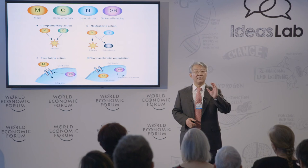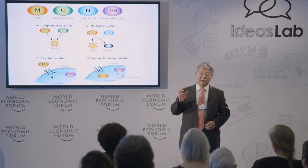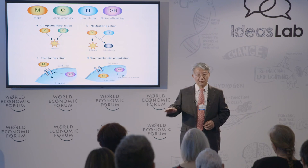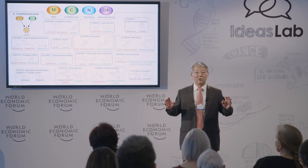This concept has actually been proven by modern systems biology: the king represents the major drug, the minister represents a complementary drug, the assistant corresponds to a neutralizing drug that reduces toxicity, and the ambassador corresponds to the delivery function and enhancing pharmacokinetics.